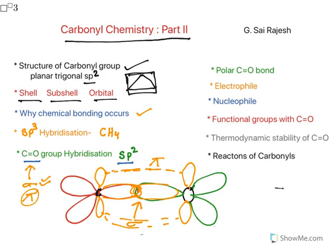That is what I covered in part 1. In this part 2, we will look at the polar carbonyl bond, what electrophiles and nucleophiles are, various functional groups containing the carbonyl component, the thermodynamic stability of carbonyl compounds and their reactivity, and then the reactions of carbonyls.